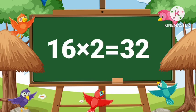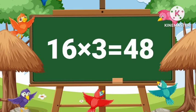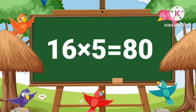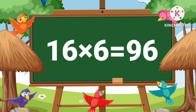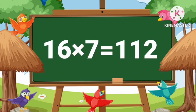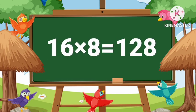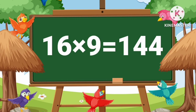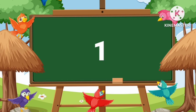Sixteen twos are thirty-two. Sixteen threes are forty-eight. Sixteen fours are sixty-four. Sixteen fives are eighty. Sixteen sixes are ninety-six. Sixteen sevens are one hundred twelve. Sixteen eights are one hundred twenty-eight. Sixteen nines are one hundred forty-four. Sixteen tens are one hundred sixty.